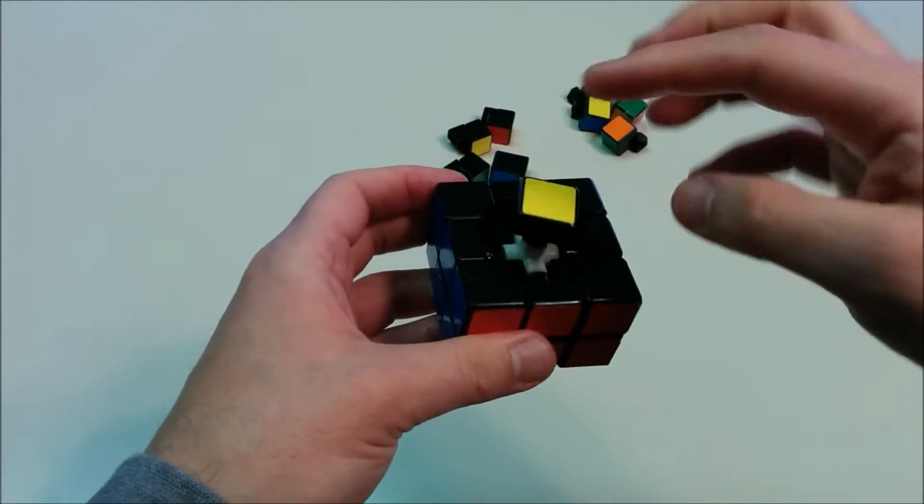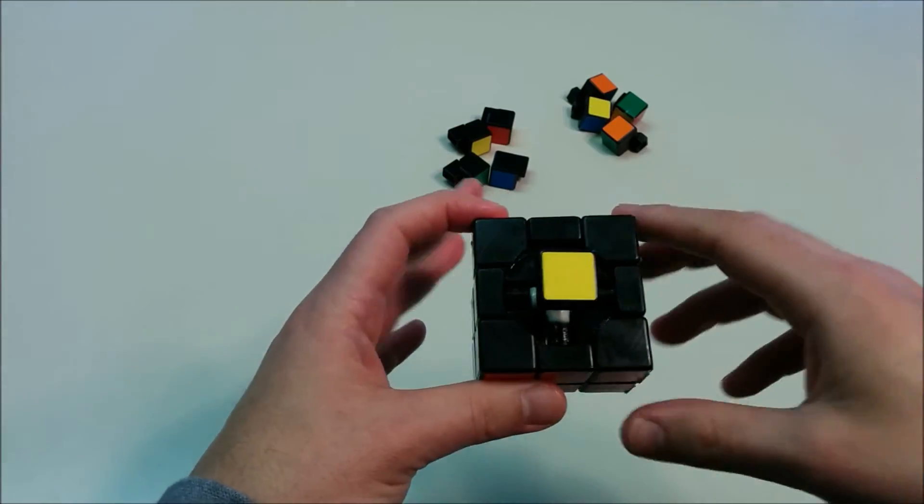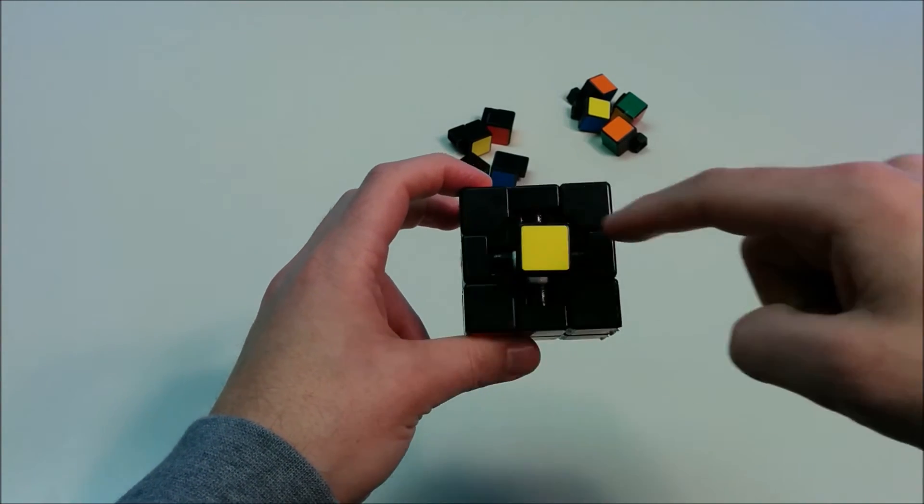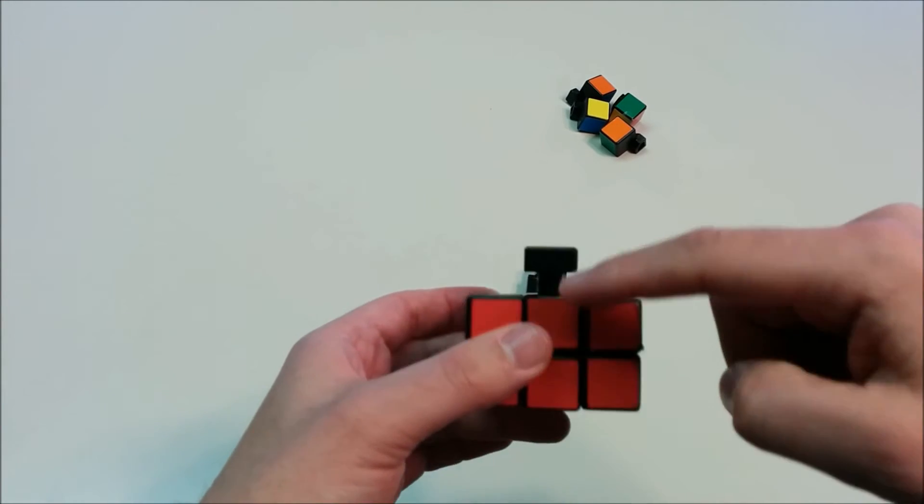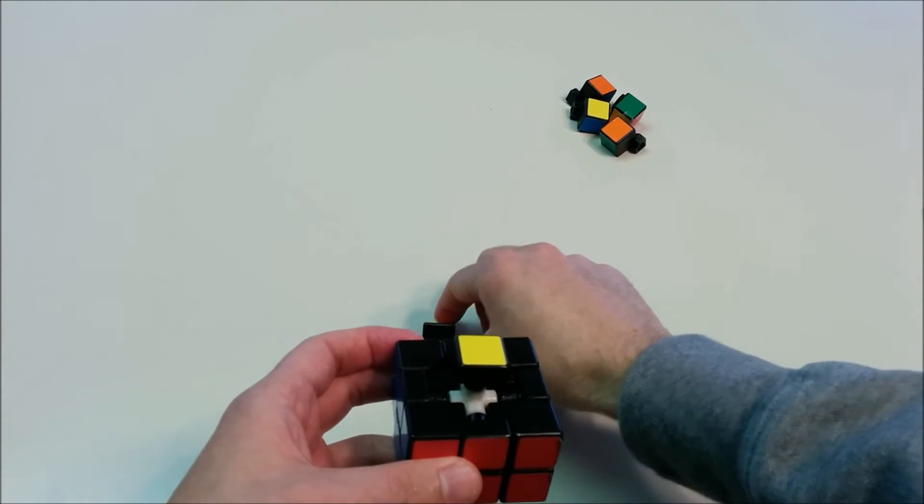And now we have two layers completely solved. We have the bottom layer and the middle layer. We only have one more layer to solve, which is the yellow side. And we're going to solve that by creating a cross.